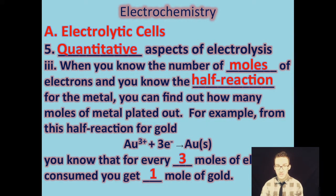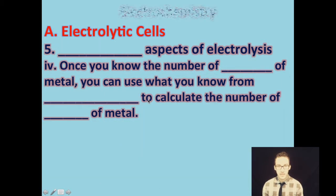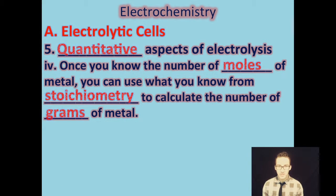Once you know the number of moles of electrons and you know the half-reaction for the metal, you can find out how many moles of metal plated out. For example, from the half-reaction that's provided there in your notes, we know that for every three moles of electrons consumed or gained there by that gold ion, we're going to get one mole of gold. And then once you know the number of moles of the metal, you can use what you know from stoichiometry to calculate the number of grams of your metal.